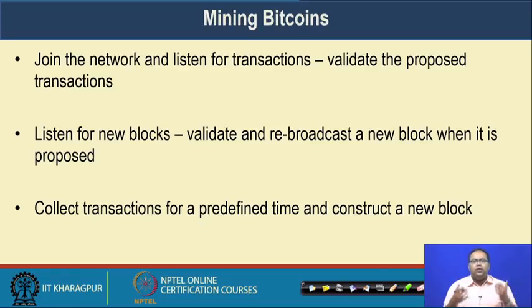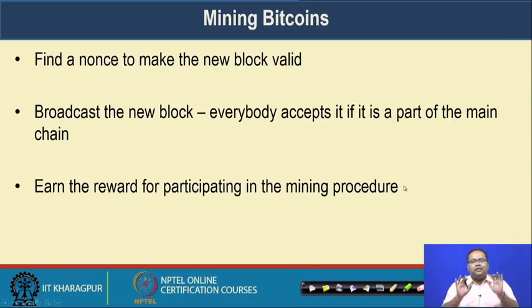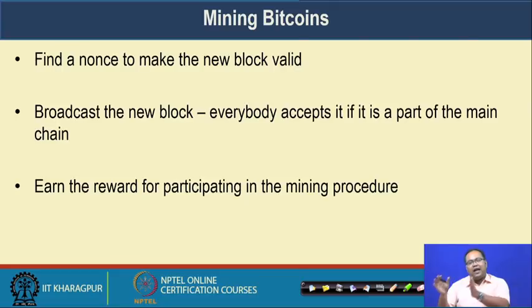As a miner you take those transactions and construct the new block. Then your task is to participate in the mining procedure where you find out a nonce to make the block valid by utilizing the predefined difficulty function — that means having a certain minimum number of zeros at the prefix of the obtained hash value. You generate the nonce according to that, which is the mining procedure. Once you have found a valid block, you broadcast that new block to your peers, and everybody in your peering system will accept that block if it is part of the main chain.